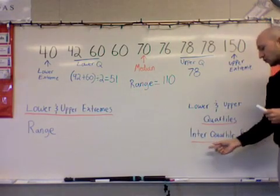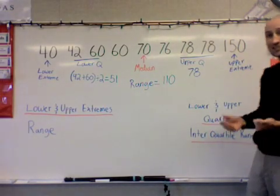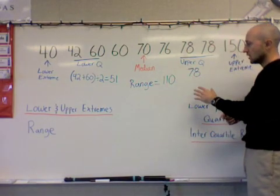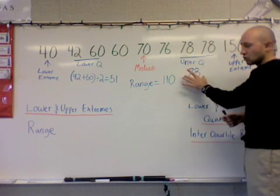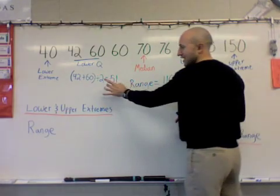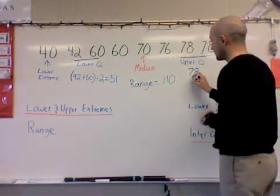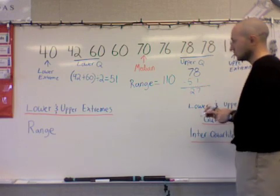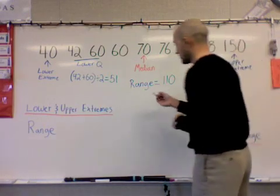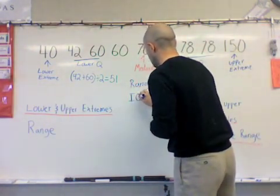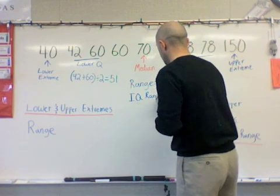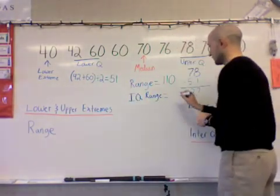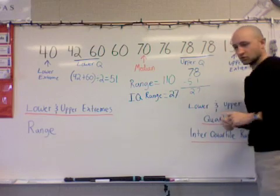Now, to find the interquartile range, what we want to do is basically the same thing that we did with the range, except I'm going to subtract my two quartiles. So we're going to start with the upper quartile, the larger number, which is 78, and we're going to subtract from it 51. So I take 51 away from it here. Well, that's 7 and a 2. So now I've found that my interquartile range, I'll call that my IQ range, was equal to the upper quartile minus the lower, gives me 27.